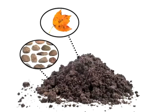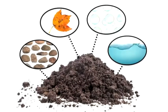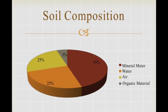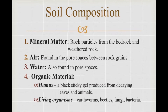Soil covers most of the land part of the earth, and it is made up of the following: mineral matter, water, air, and organic materials. Mineral matter are rock particles from the bedrock and weathered rock. Air, like carbon dioxide and nitrogen, are found in pore spaces between rock grains. Water is also present in the pore spaces. And there's organic material like decaying plants and animals, and living organisms like earthworms, bacteria, and fungi.